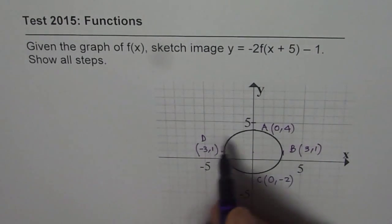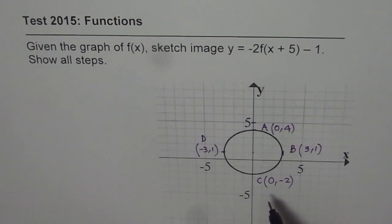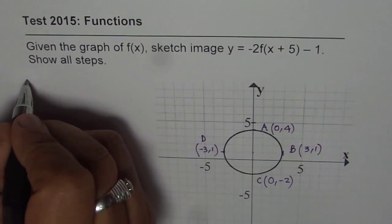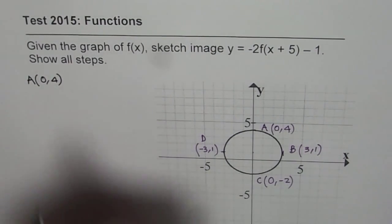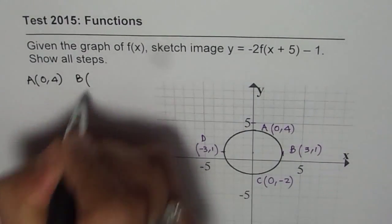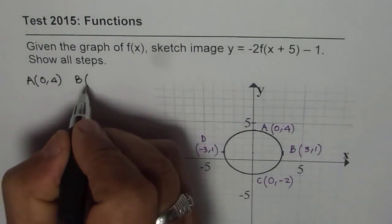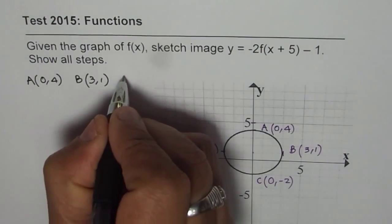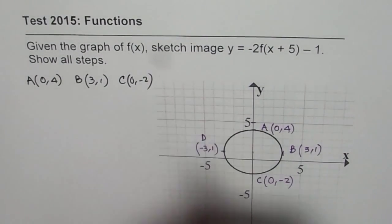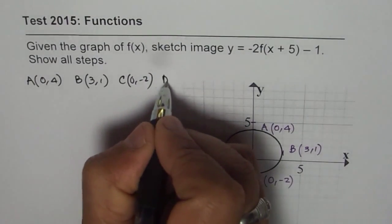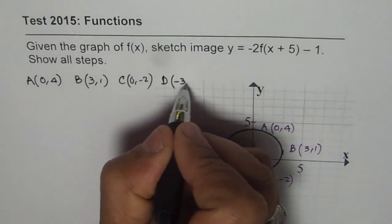Coordinates are minus 3 and 1. So with the help of these points, we'll explain all the steps. So let me first write down the points which we are considering for the circle. So we have A, which is the y-intercept, B, which is 3, 1, C, which is 0, minus 2, and then we have D, which is minus 3, 1.